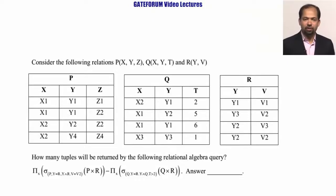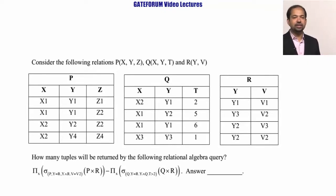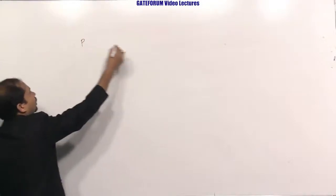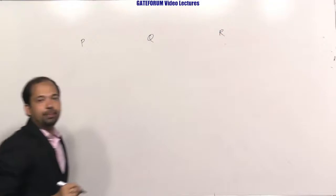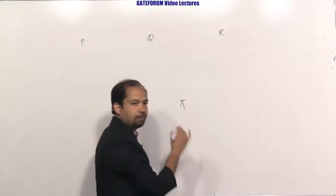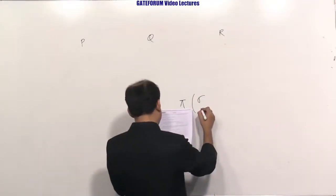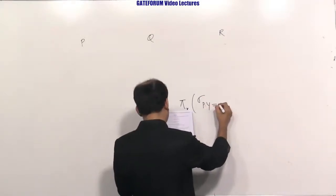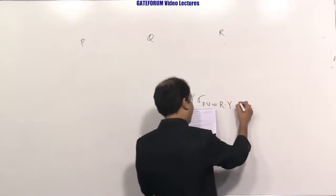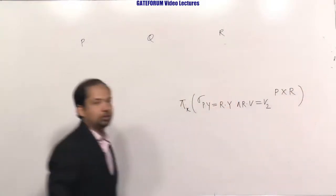Now let us solve this relational algebra question. We are given three tables P, Q, and R, and must execute a query using the subtraction operator. The first query is: π_X (σ_{P.Y=R.Y AND R.V=V2} (P × R)). The second query is: π_X (σ_{Q.Y=R.Y AND Q.T>2} (Q × R)). The final result is the first query minus the second query.